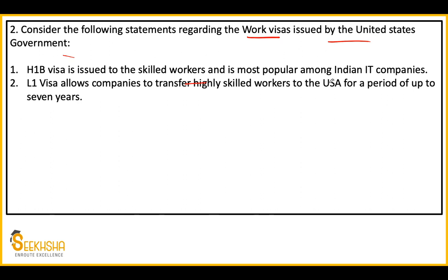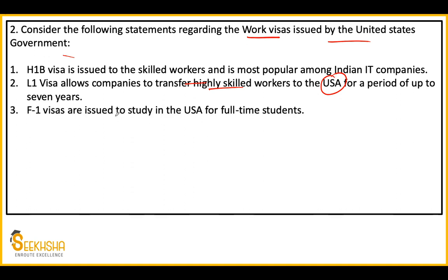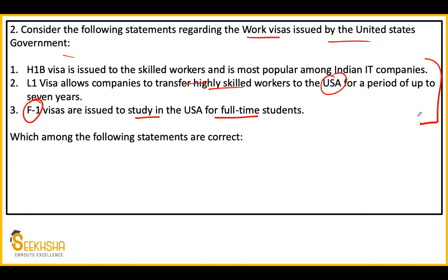Third statement: F-1 visas are issued to full-time students studying in the USA. You need to tell which statement is correct. Options: 1, 2 and 3 are correct; 1 only; 1 and 3; or 2 and 3. If you know the different types of visas, you can easily answer. The answer here will be Option A — 1, 2 and 3. All three statements are correct.